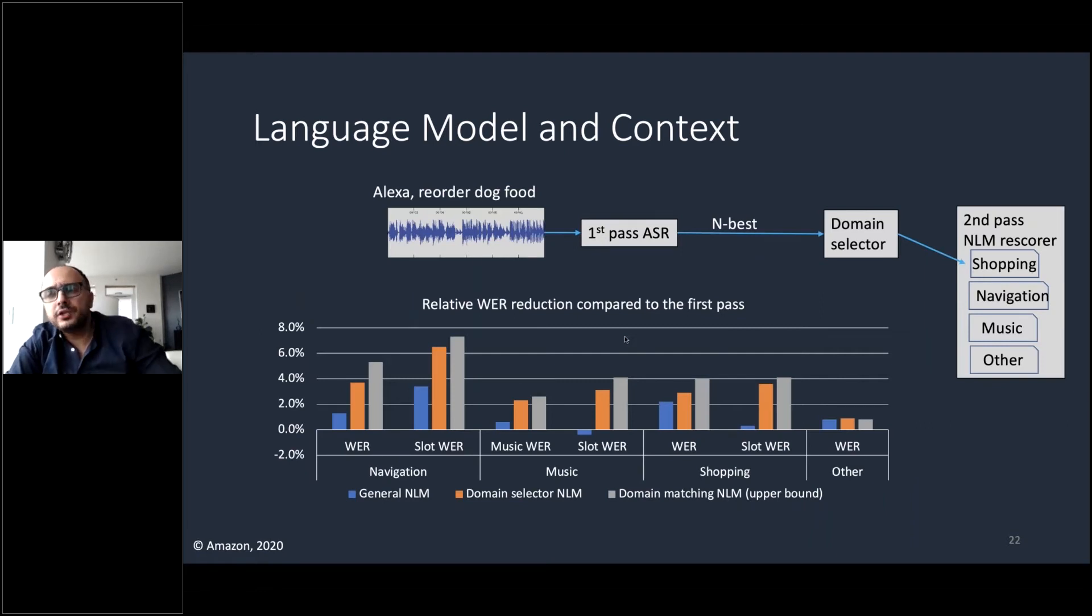But we also want to make sure that our language models are domain-aware. So, if you look at a typical usage for Alexa and voice assistants, different users have different type of usage. Users can be interacting with devices to carry shopping-like queries, asking about navigation queries, or playing music, or many more domains.